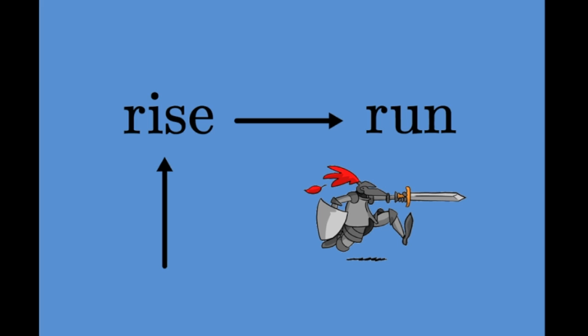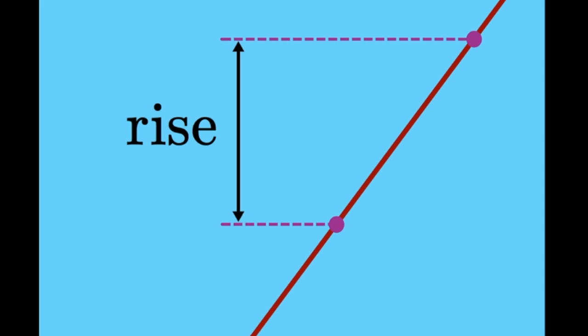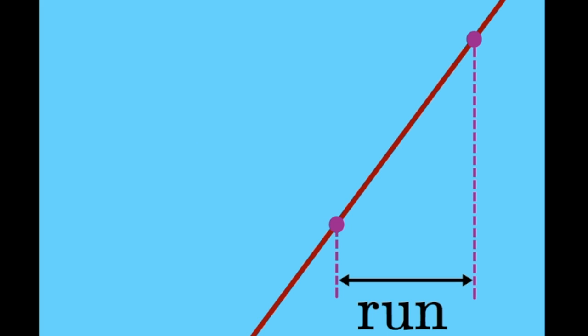More new terms. What are these rise and run things? Rise refers to the vertical distance between two points on a graph. Run is the horizontal distance between those same two points. That means the gradient is given by this distance divided by this distance.